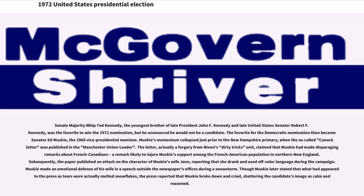The letter, actually a forgery from Nixon's Dirty Tricks unit, claimed that Muskie had made disparaging remarks about French Canadians, a remark likely to injure Muskie's support among the French American population in northern New England. Subsequently, the paper published an attack on the character of Muskie's wife Jane, reporting that she drank and used off-color language during the campaign. Muskie made an emotional defense of his wife in a speech outside the newspaper's offices during a snowstorm. Though Muskie later stated that what appeared as tears were actually melted snowflakes, the press reported that Muskie broke down and cried, shattering the candidate's image as calm and reasoned.